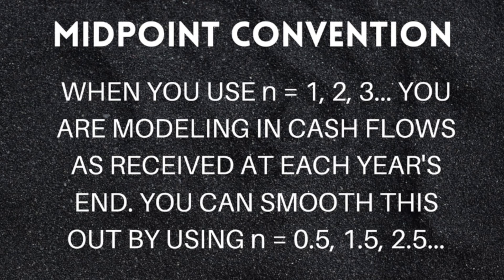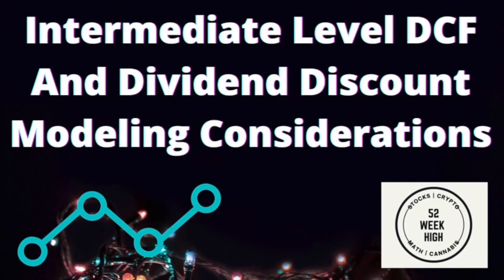One last item is discounting. When you discount at n equals 1, 2, 3, etc., that models cash flows being received at the end of each year — but that isn't realistic at all. Using n equals 0.5 for the first year, and so on, is an easy, though not perfect, fix.